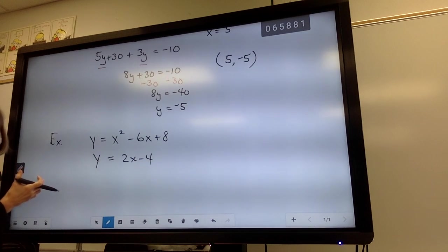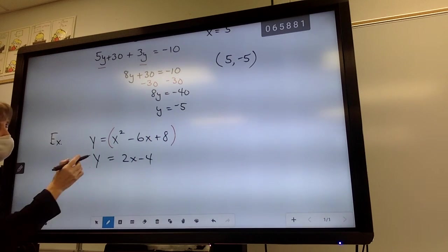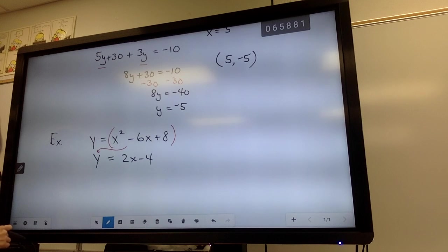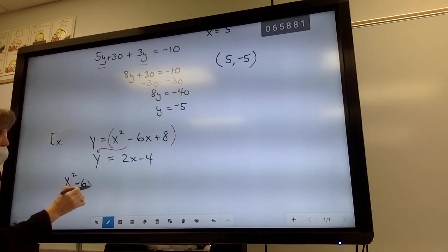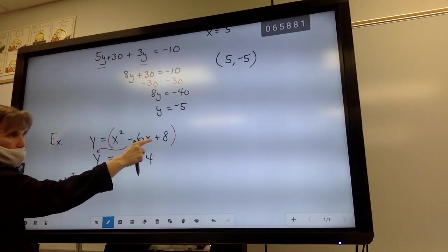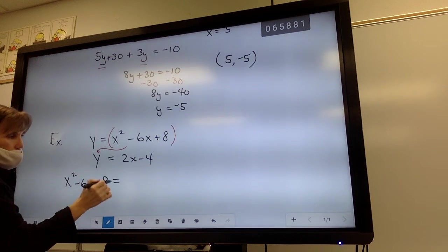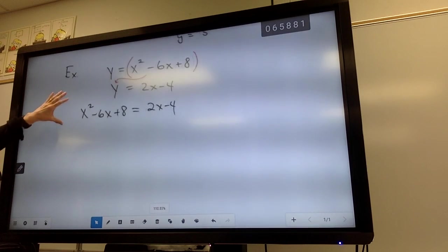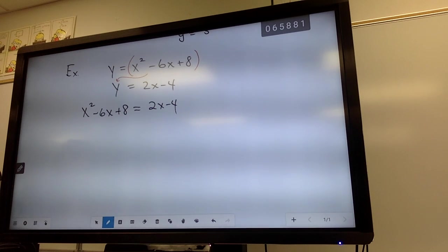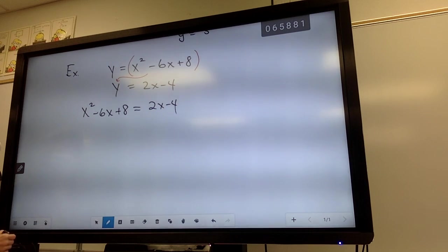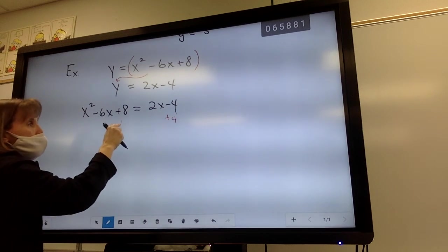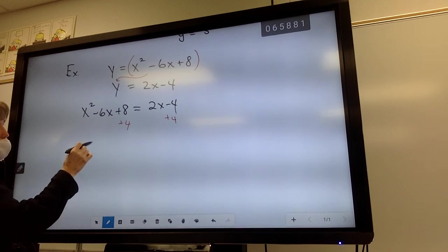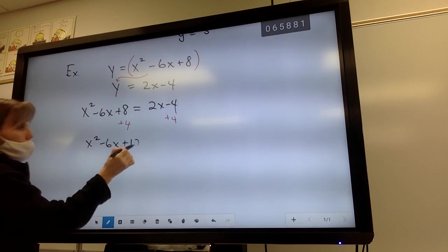And we're going to use the substitution method. So if all of this is equal to y, then I can substitute that into the bottom equation for the y. So I can say x squared minus 6x plus 8, all of that is equal to y. So it's all going there. And you finish it out. It equals the 2x minus 4. Now, how do I solve a quadratic? You do the plus 4 first. Okay. I could add 4. Okay. That would leave me with x squared minus 6x plus 12 equals 2x.